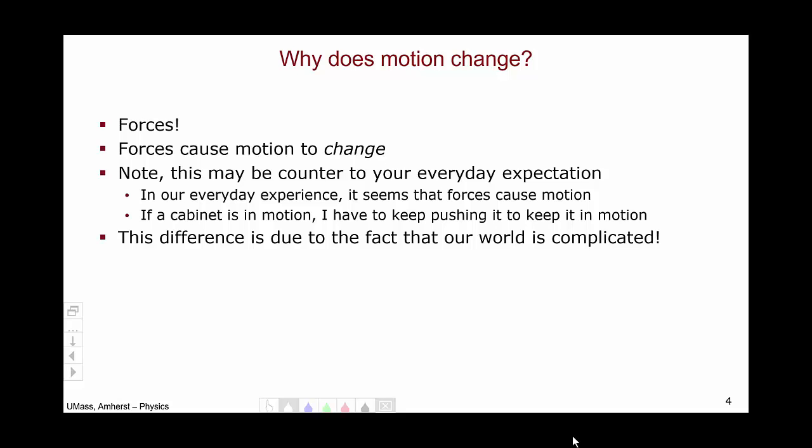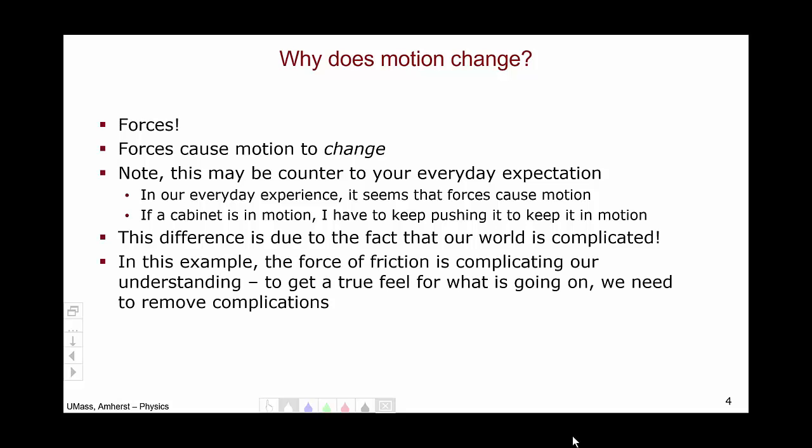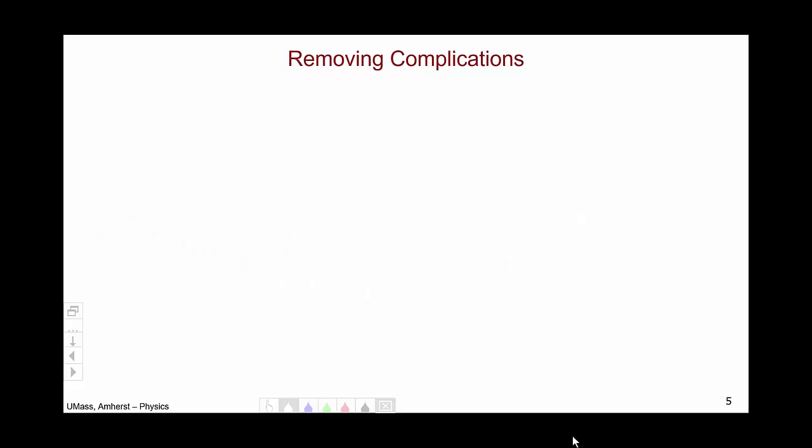And this difference between our everyday experience and the real laws that govern the universe is due to the fact that our world is very complicated. In the example of the cabinet, the friction between the cabinet and the floor is complicating and impeding our understanding. To get a true feel for what's going on, we need to remove all the complications of our real world.